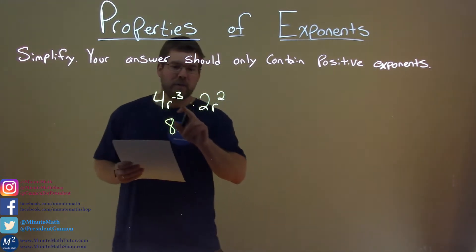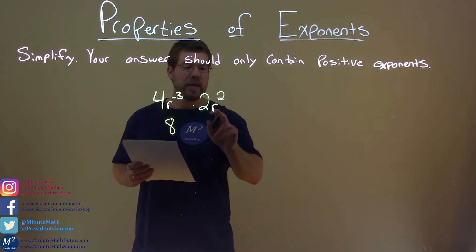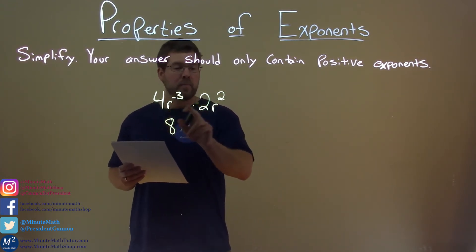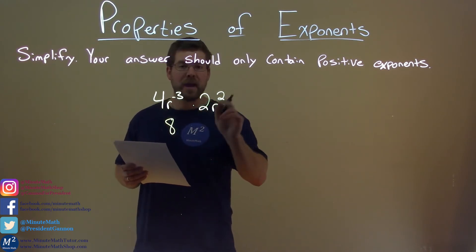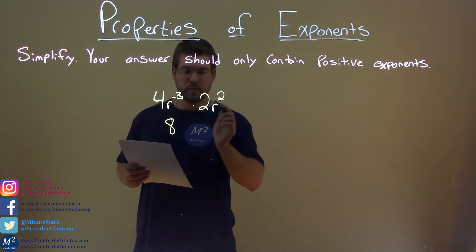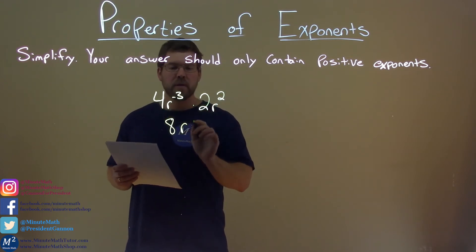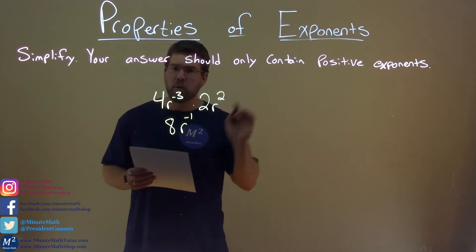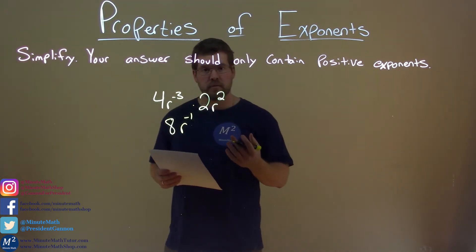Now, we have these variables of r — r to the negative third power and r squared. When we multiply them and have the same base, we have to add the exponents. So, negative 3 plus 2 is negative 1, but we're told that we can't have any negative exponents.